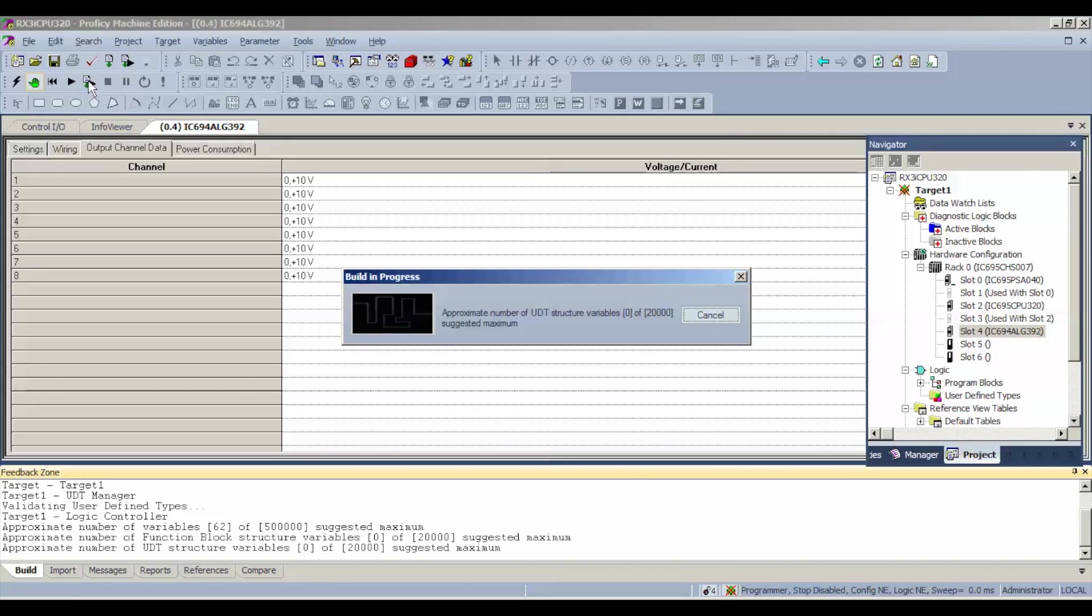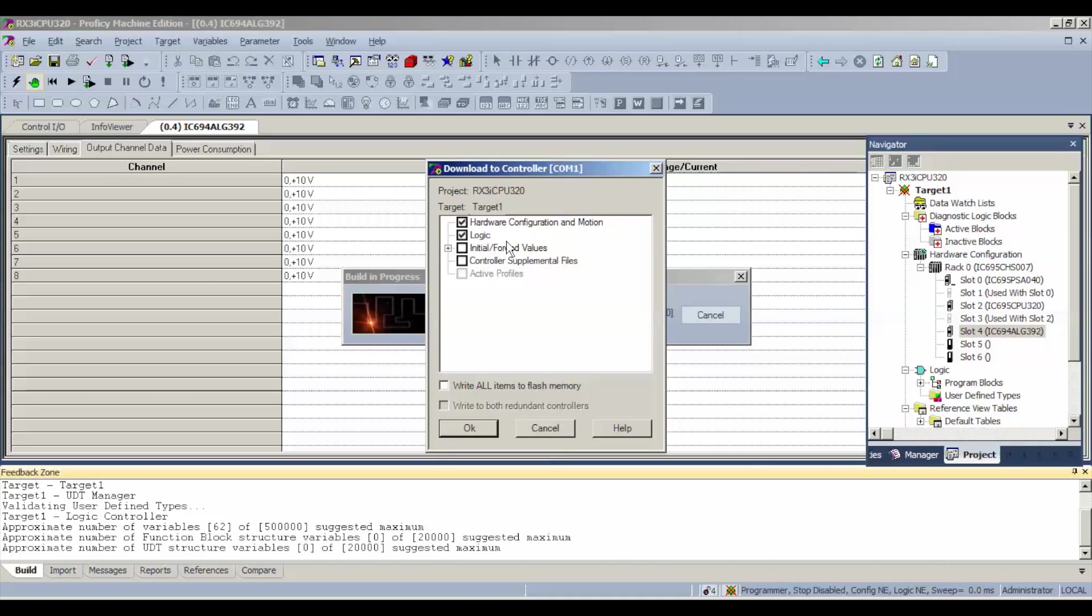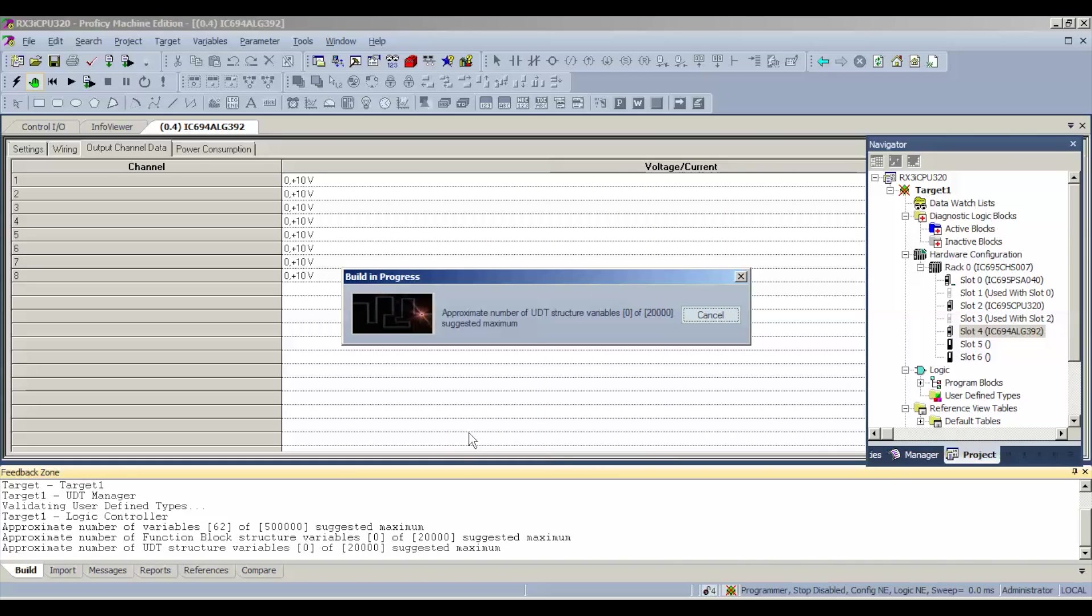Click on download and run, which is the icon that my arrow is over right now. The first thing it's going to ask us is what exactly do we want to download to the processor. In this case, just hardware configuration in motion and logic. No need to do initial force values or write it to permanent flash memory. Not for this test.